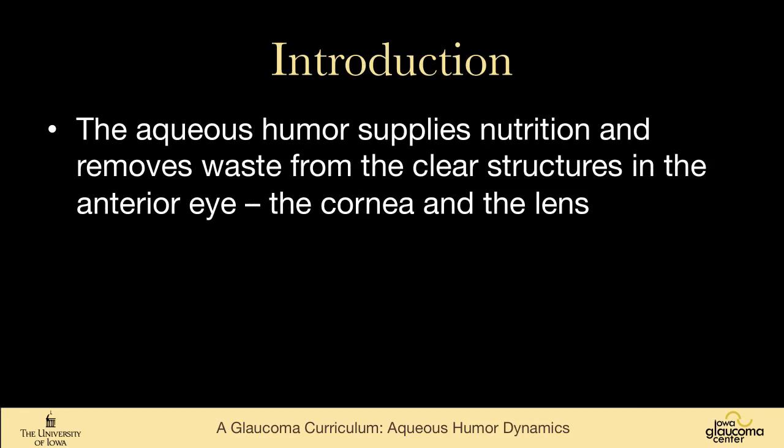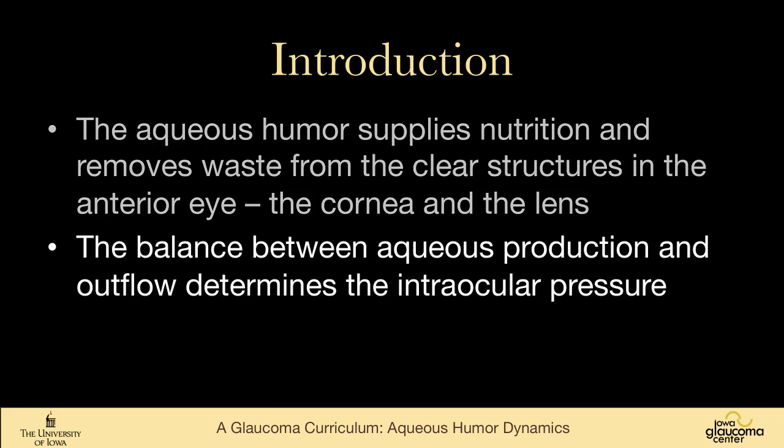We know that the aqueous humor supplies nutrition and removes waste from the clear structures in the anterior eye — the cornea and the lens — structures that really can't have blood vessels going to them. And the balance between aqueous production and aqueous outflow determines the intraocular pressure.